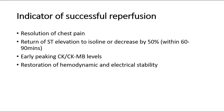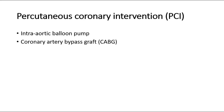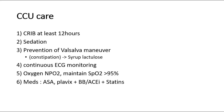These are the indicators of successful reperfusion: resolution of chest pain, return of ST elevation to isoline or decrease by 50% within 60 to 90 minutes, early peaking CK or CKMB levels, and restoration of hemodynamic and electrical stability. PCI can also be done by inserting an intra-aortic balloon pump, or coronary artery bypass graft surgery. After stabilization, send the patient to the cardiac care unit with monitoring, adequate sedation, prevention of Valsalva maneuver using lactulose if constipated, continuous ECG monitoring, and oxygen.